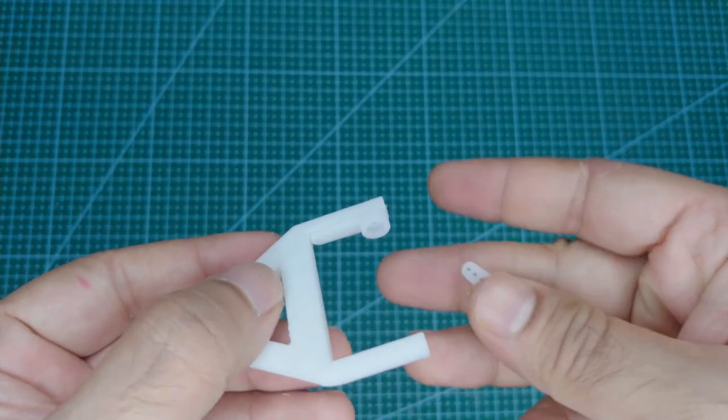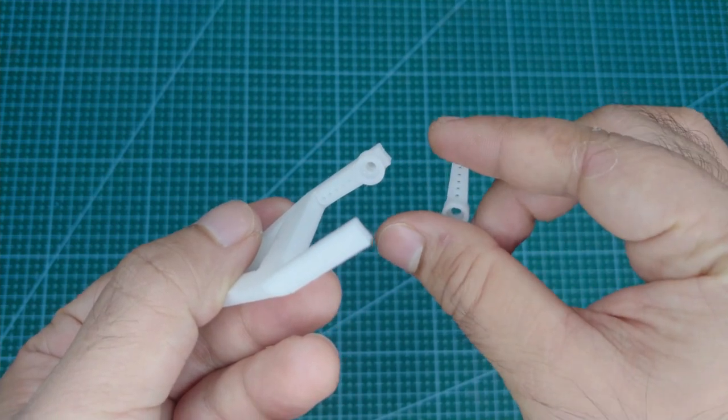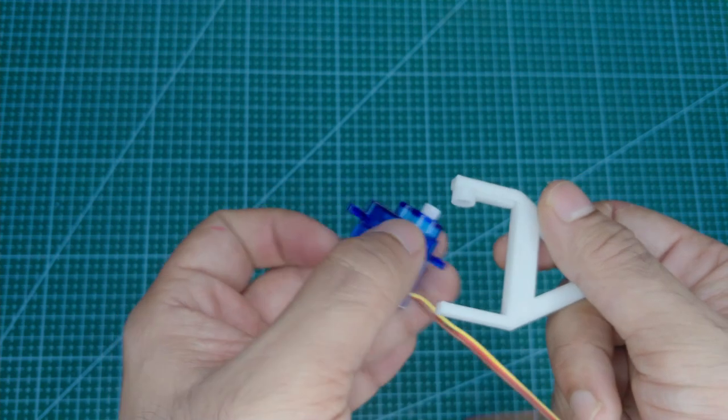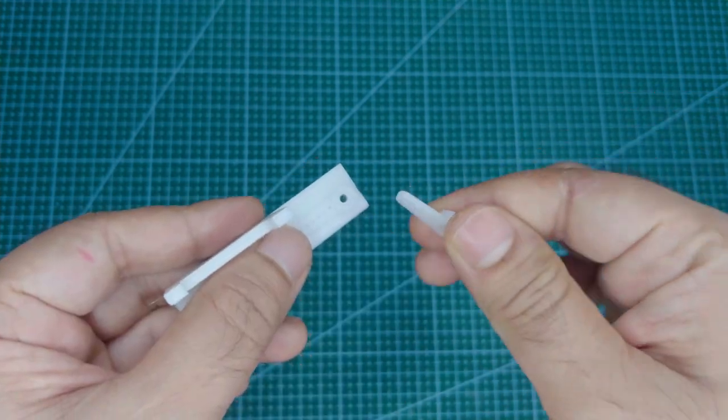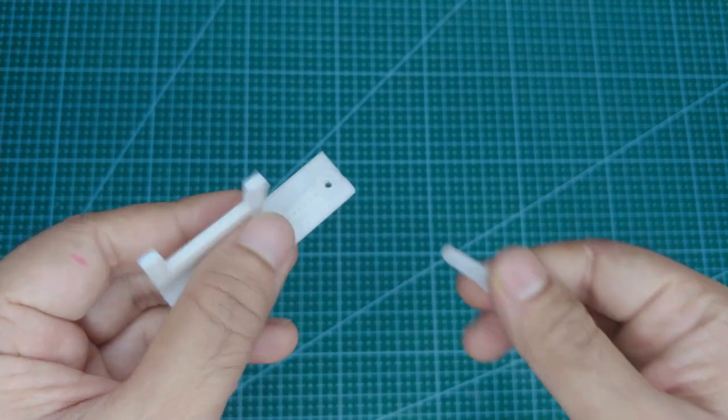As you can see, I have attached a horn to the fin here and now we can connect this vertical movement fin to the SG90 servo motor. I have done the same for this horizontal movement fin as well.